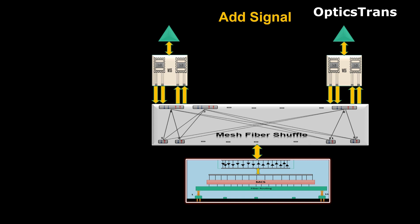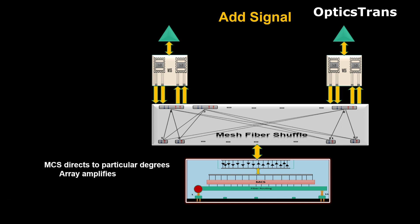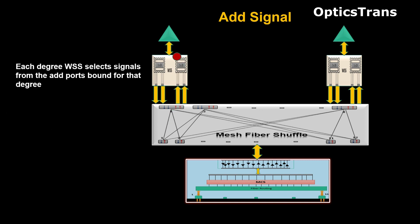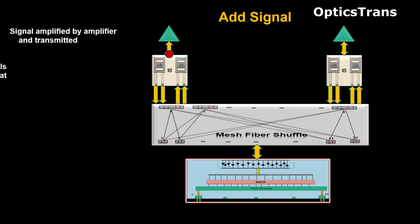For illustration purposes, we'll send red light in this diagram. In the add direction, the transponder is connected with the MCS card, and MCS directs signals from the add-drop ports to a particular degree's bound port. The array in the add direction amplifies the signal. Then the fiber shuffle directs the signal to a particular degree's WSS add ports. The WSS selects the signal from the add ports, and the signal is amplified by the amplifier and transmitted.